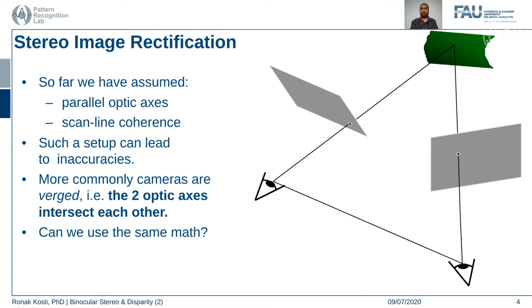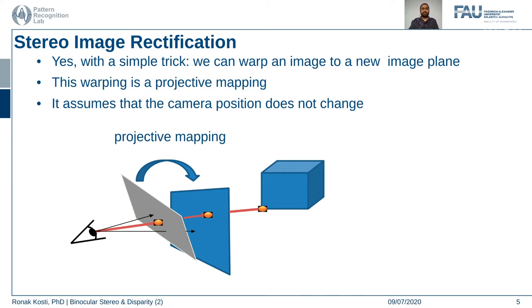The question is: we already know our binocular stereo setup, so can we reformulate this problem into the previous problem in such a way that we can use the previously established techniques? This is a very common practice in computer vision — you reformulate or repurpose certain things in such a way that you can reuse previously well-established methods to solve a newer problem. In stereo image rectification there is a simple trick: we do a projective mapping of the image using a homography matrix — a simple homographic transformation.